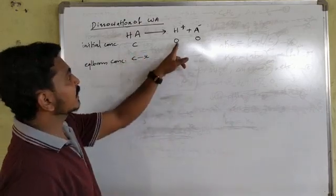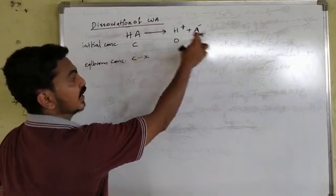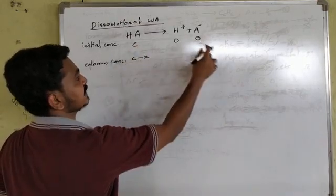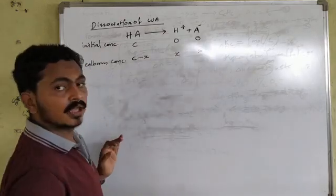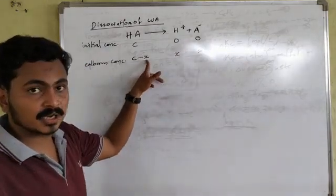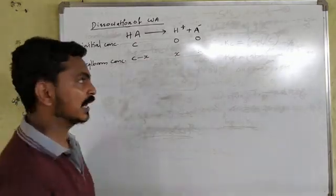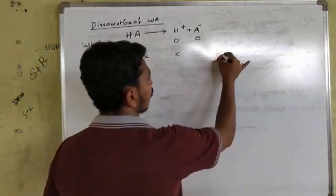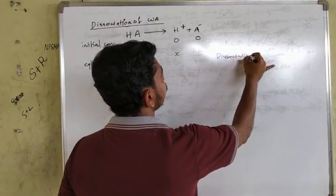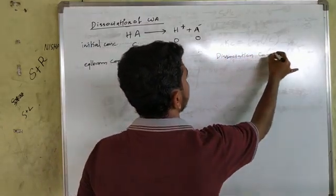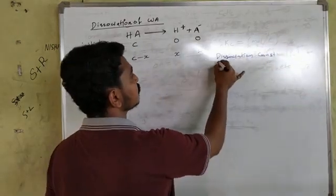Let us look at this. One mole is equal to one. Two moles correspond to x. x is equal to the number of moles. This gives us the concentration at a given time. This leads us to the dissociation constant — the dissociation constant or degree of dissociation.